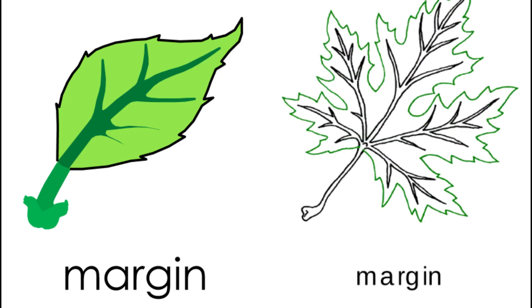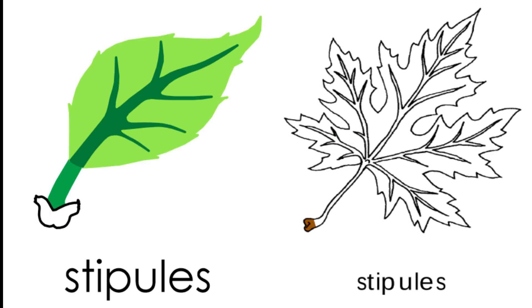The margin of the leaf is the outer edge of the leaf. The stipules of the leaf are little leaflets at the base of the petiole. The stipules may be separated from each other or joined together.